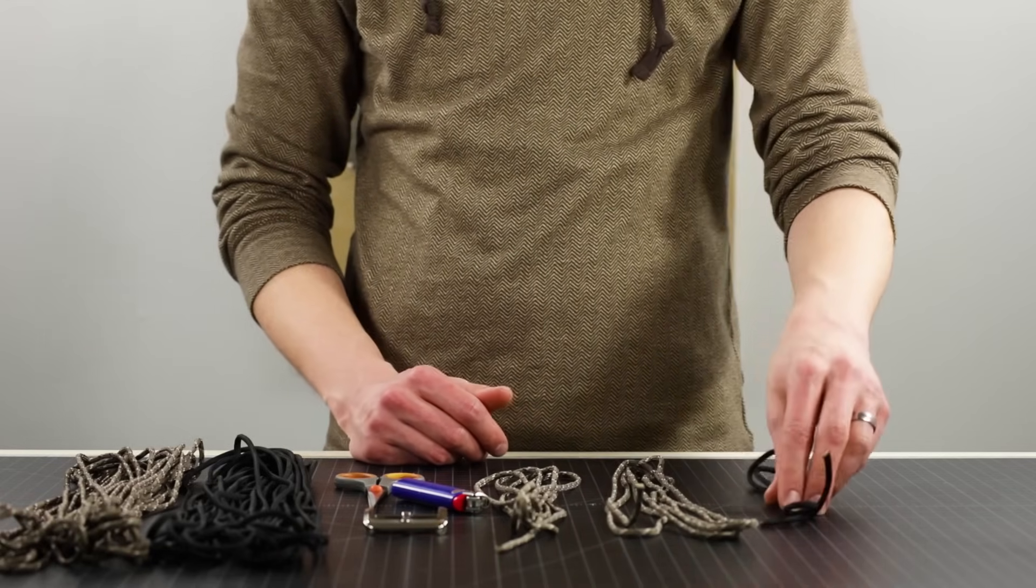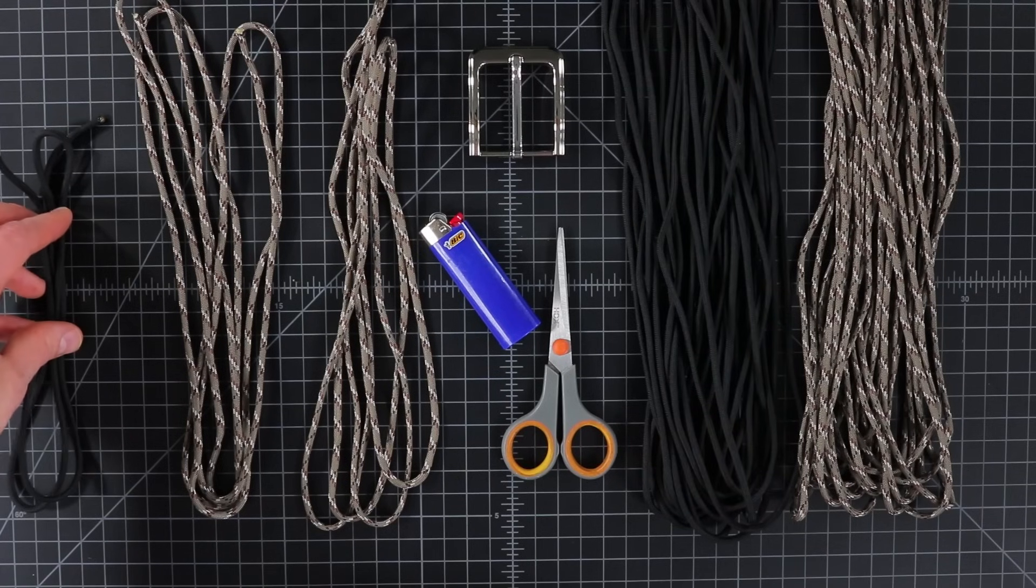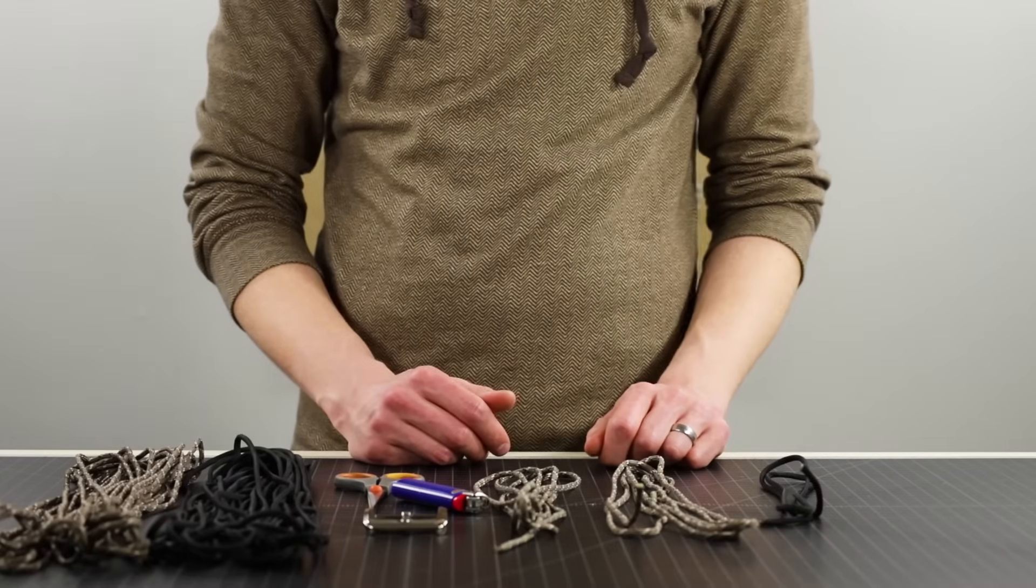And then this little three foot cord over here is just for a retention strap. It's optional but we'll be adding that at the end to tuck the belt into.